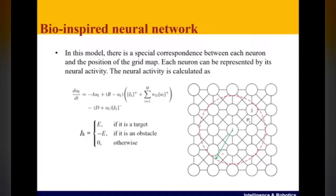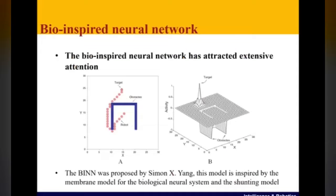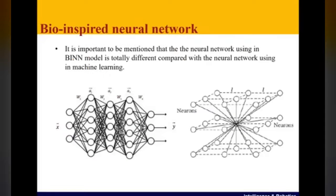The neural activity is calculated using the shunting model. The target has maximum and positive neural activity, which could globally propagate through the neural network to track the robot, while the obstacles have only local effects without propagating.